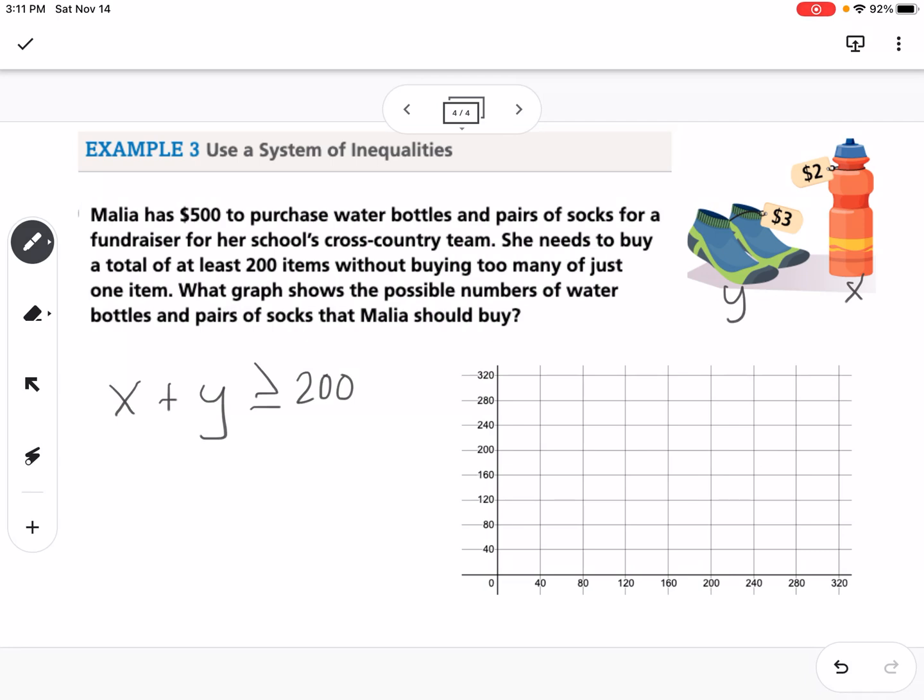Then we want to focus on money. I know it costs $2 for every water bottle and it costs $3 for every pair of socks, and she only has $500 to purchase those things. So that means 2x plus 3y, the cost of those things, needs to be less than or equal to 500.